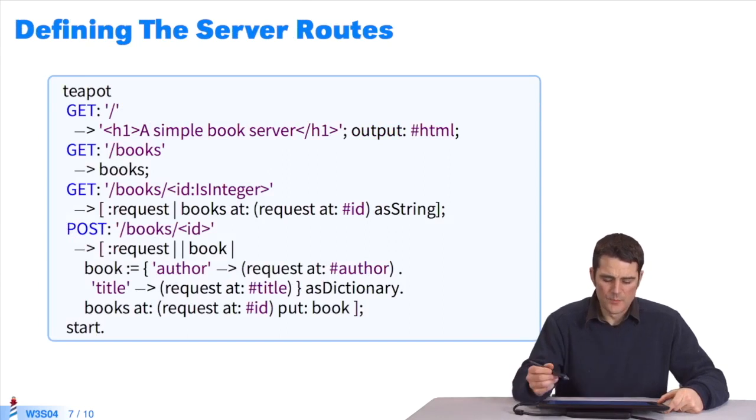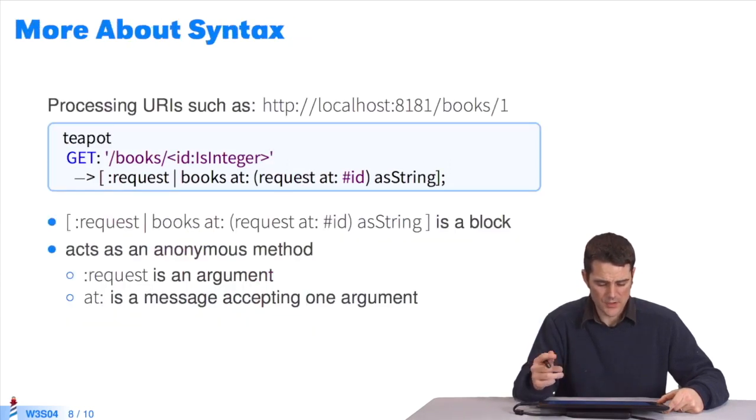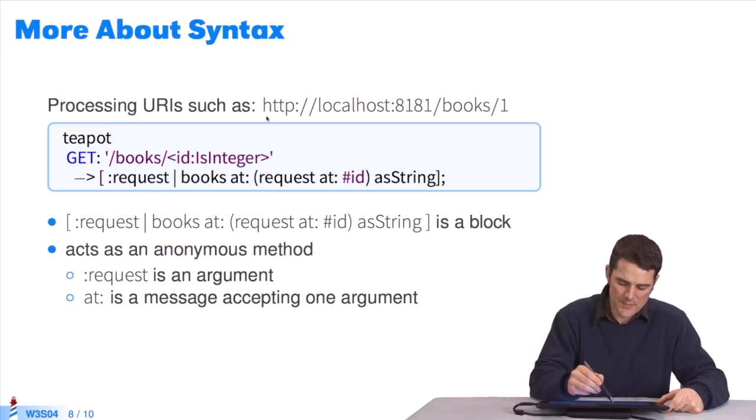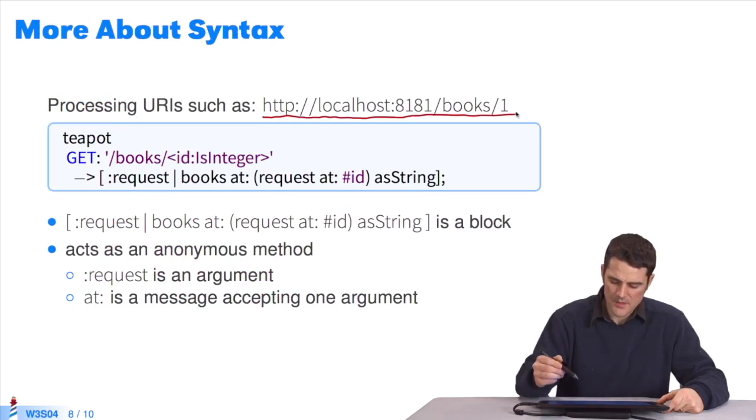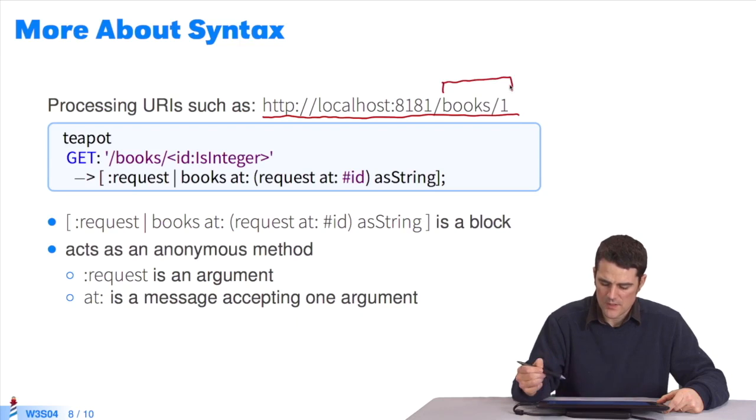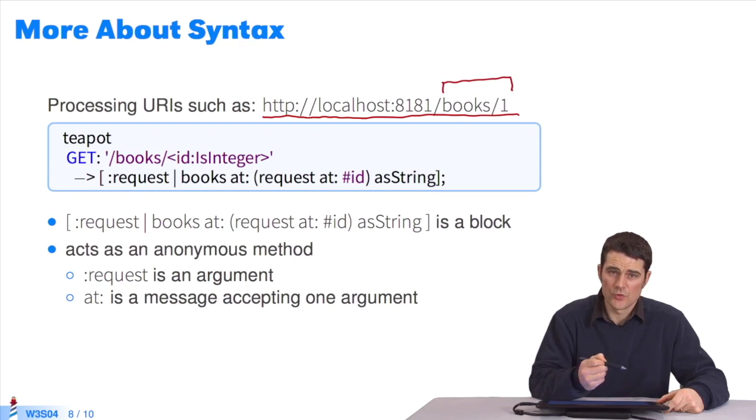So to make the server work, you won't just define the server's configuration, but also routes. I will explain using a smaller example. This is an extract of the complete code. If I want my application to process URLs like this one, which ends with books slash one, if I want the information on the book one, I define a route in my Zinc application. When I receive a request of the type GET, which starts with books and an integer, it executes this block of code.